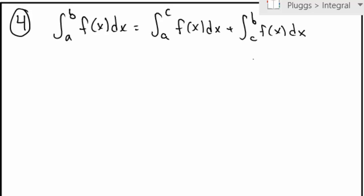So here, c is a constant that lies in between a and b. So what it says is that if I want to integrate the function from a to b, I can integrate it from a to c, and from c to b, and add these two together.